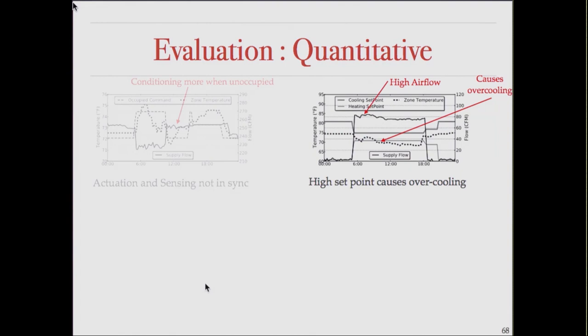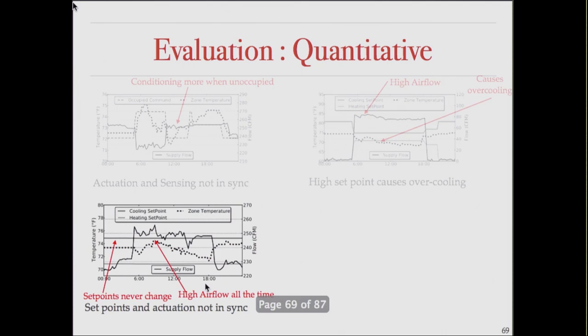One interesting anomaly this immediately caught was a room where actuation and sensing were not in sync: whenever it was unoccupied it was being cooled a lot, dropping the temperature, and whenever it was occupied the reverse happened. Essentially, somewhere in the software there's a flip between what occupied and unoccupied modes are doing. It's not a huge anomaly because temperatures don't drift much in San Diego, but it's clearly a misconfigured room. Another common anomaly: the set points are supposed to change at the same time every day, but for a number of rooms this change doesn't happen.